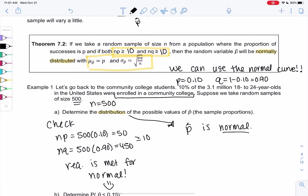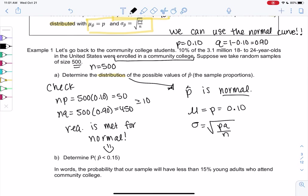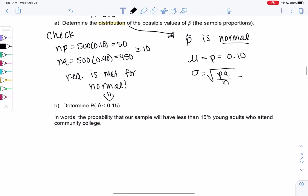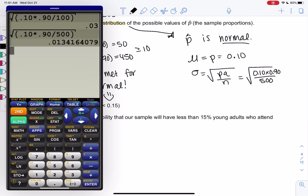And then I usually just like to find the mean and standard deviation, because if we're using the normal curve, we're going to need those eventually. So mu is equal to p, which is 0.10. And sigma is just a formula, pq over n, all in a square root. So it'll be 0.10 times 0.90, all over 500. And just make sure all three of those numbers are in the square root. And you should get 0.013416, because I want five digits.